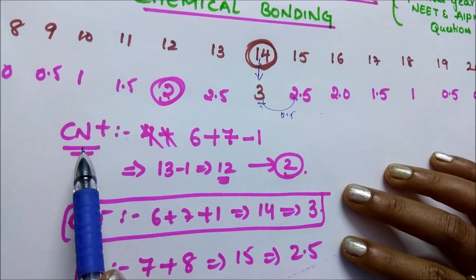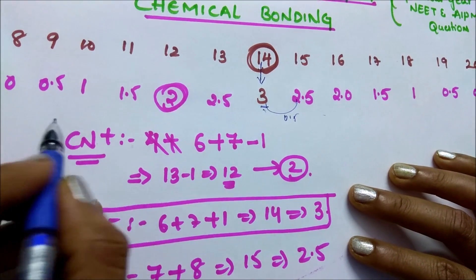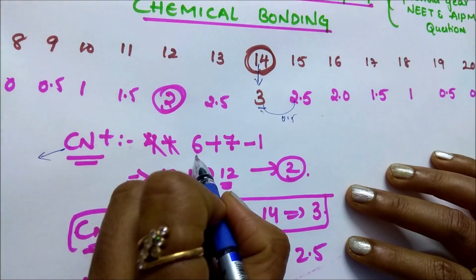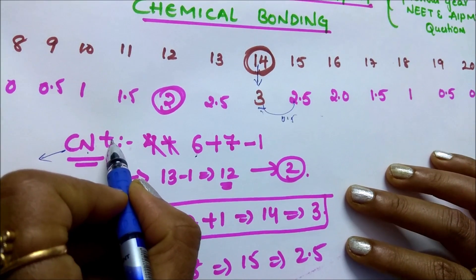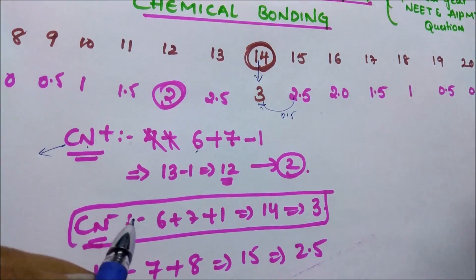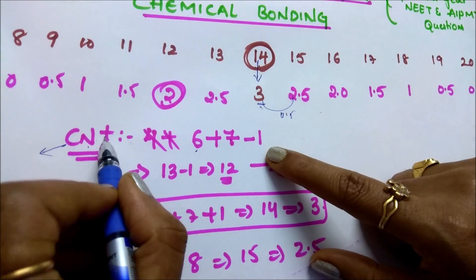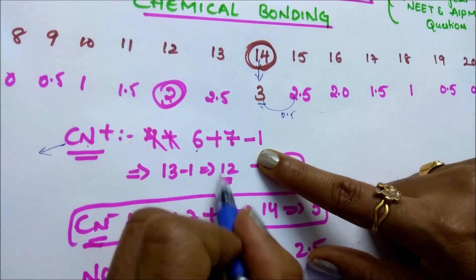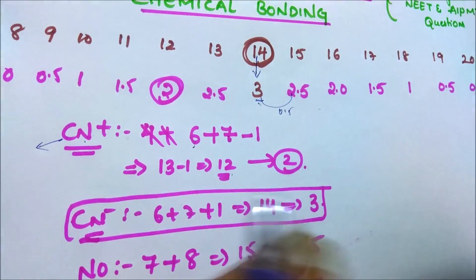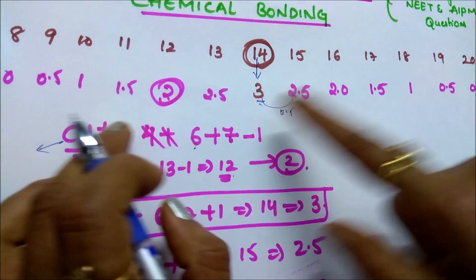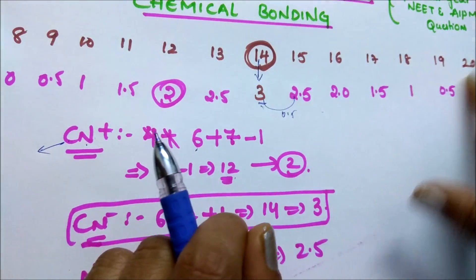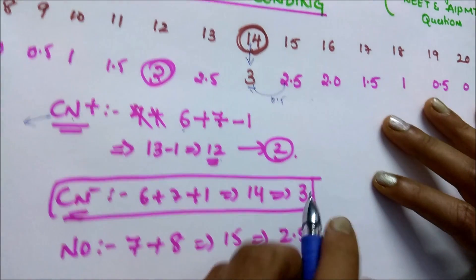Coming to CN+: take the atomic numbers — carbon is 6 and nitrogen is 7. Plus means it has lost one electron, so you remove one electron. You get 12. 12 means the bond order is 2. Write this down; through practice you will get it easily.